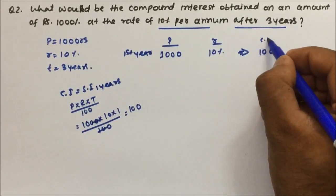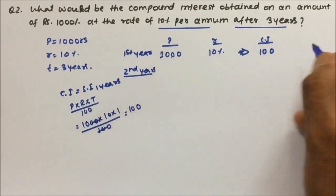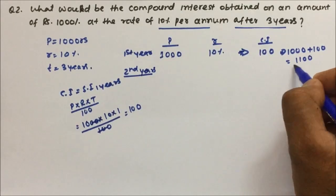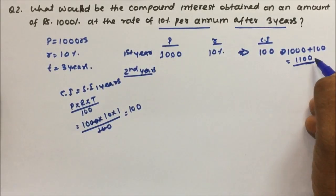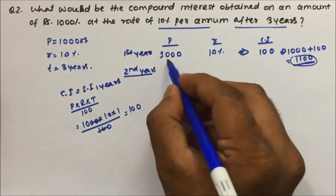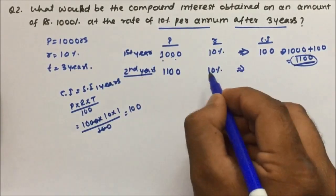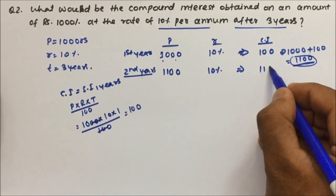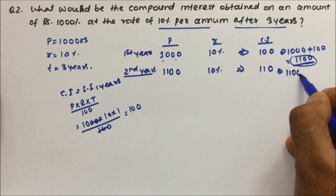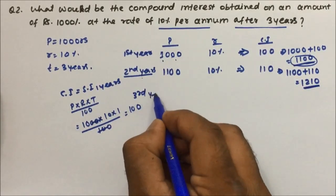For the second year, principal becomes 1000 plus 100 equals 1100 rupees. Ten percent of 1100 is 110 rupees — that is the second year compound interest. Adding to the principal: 1100 plus 110 equals 1210 rupees. For the third year, principal is 1210 rupees at 10 percent. Ten percent of 1210 is 121 rupees — that is the third year compound interest.